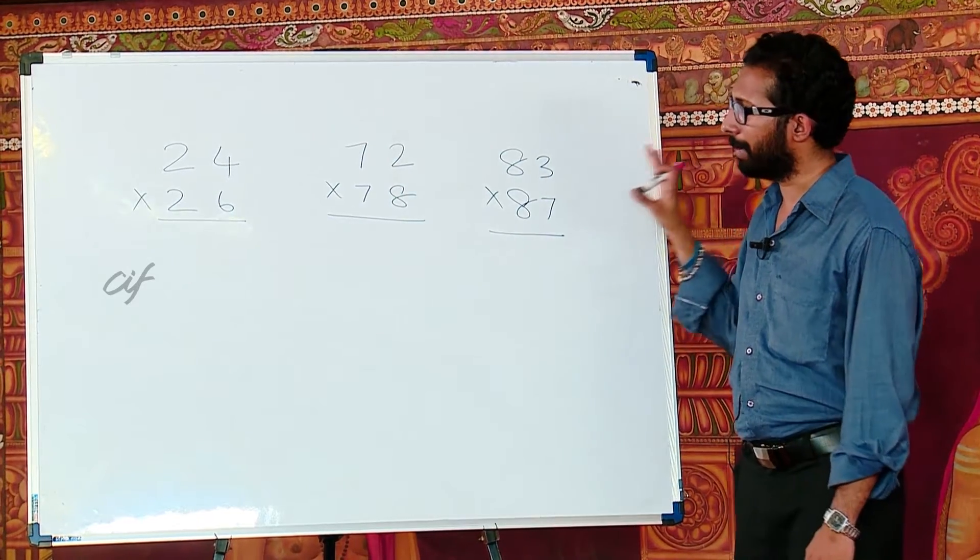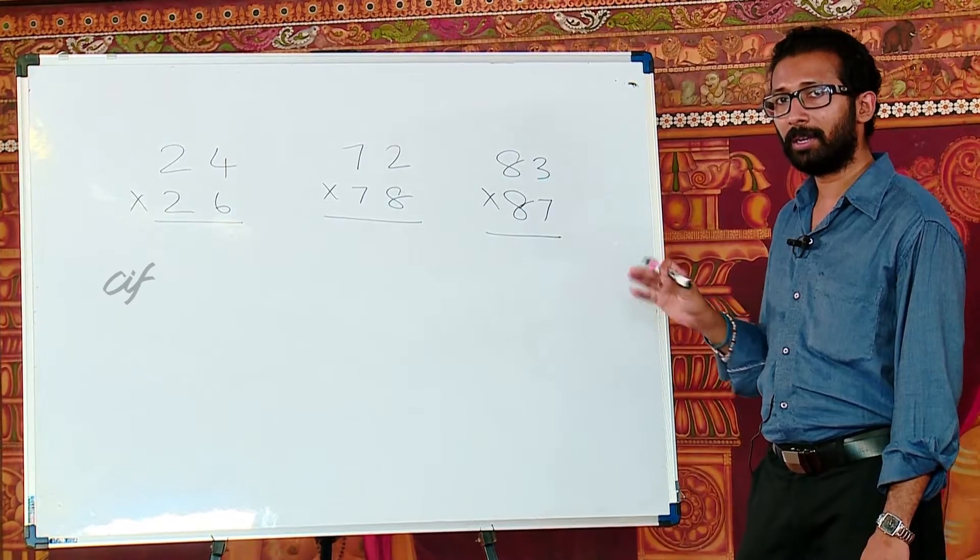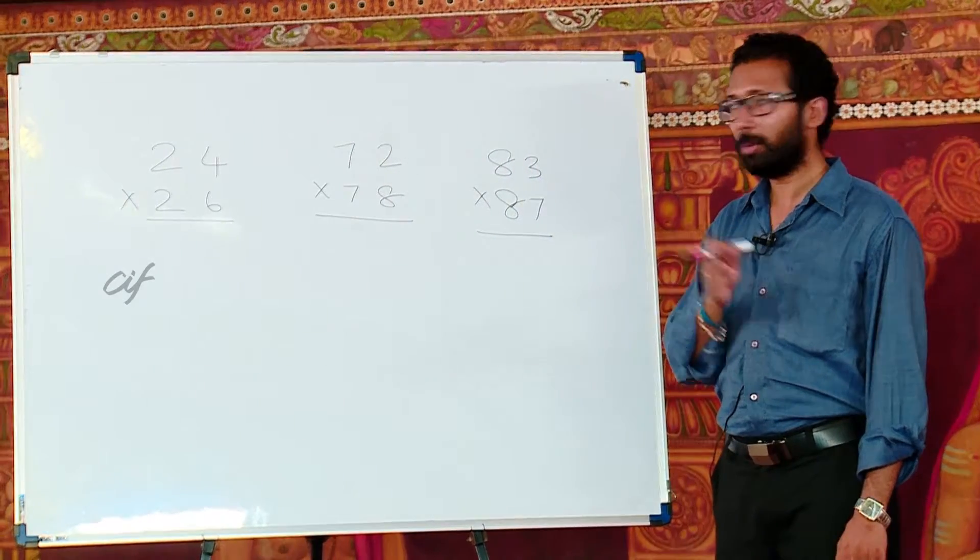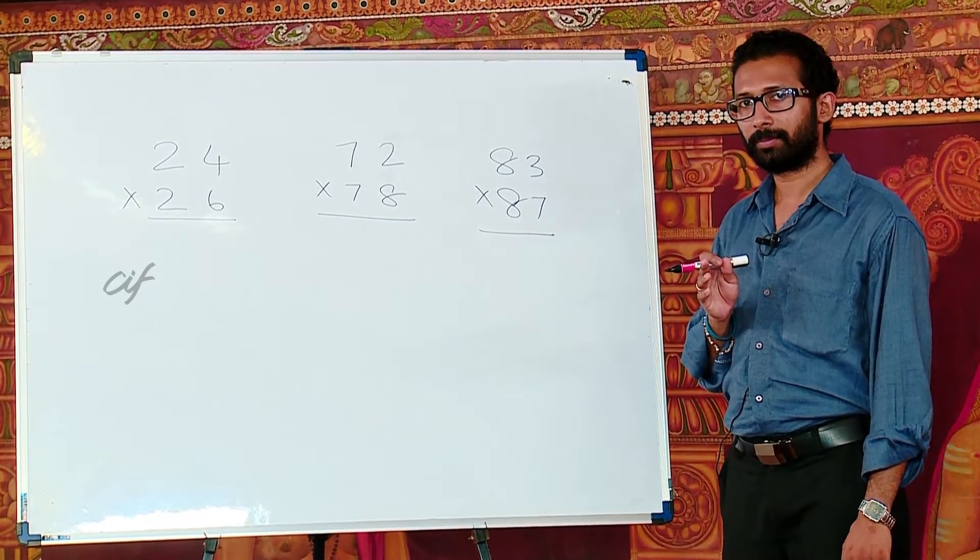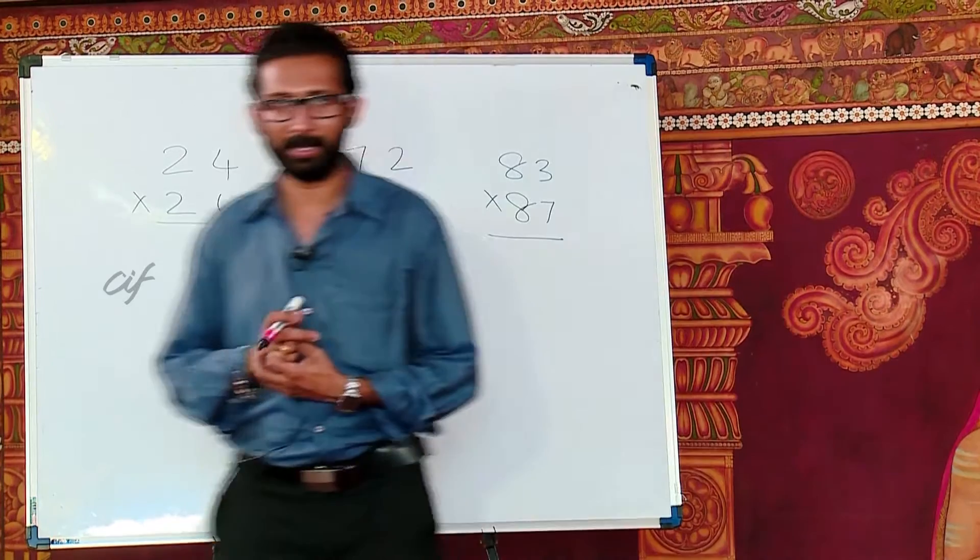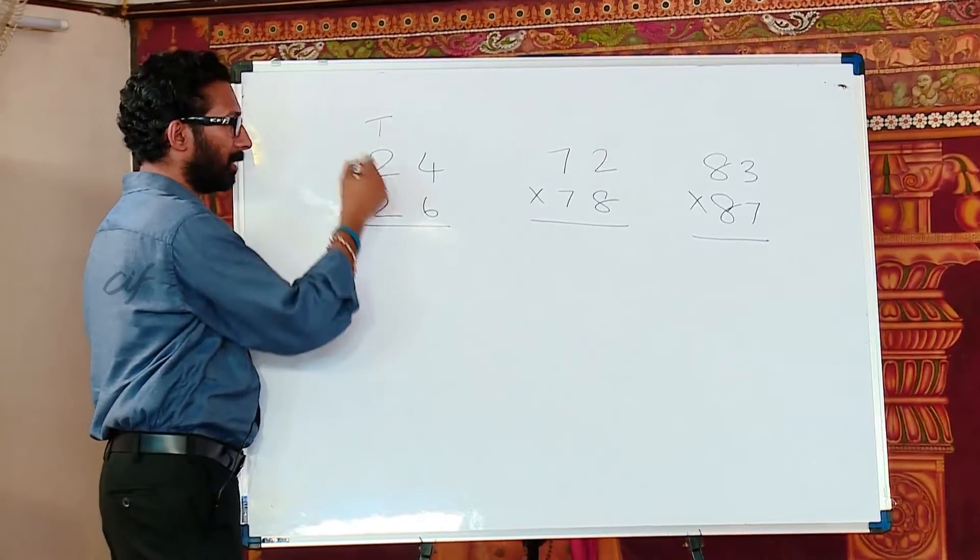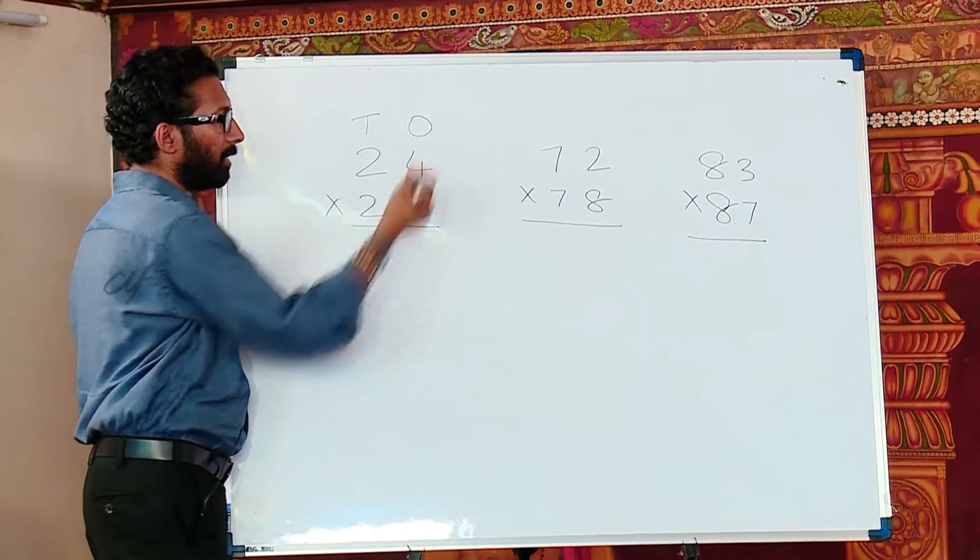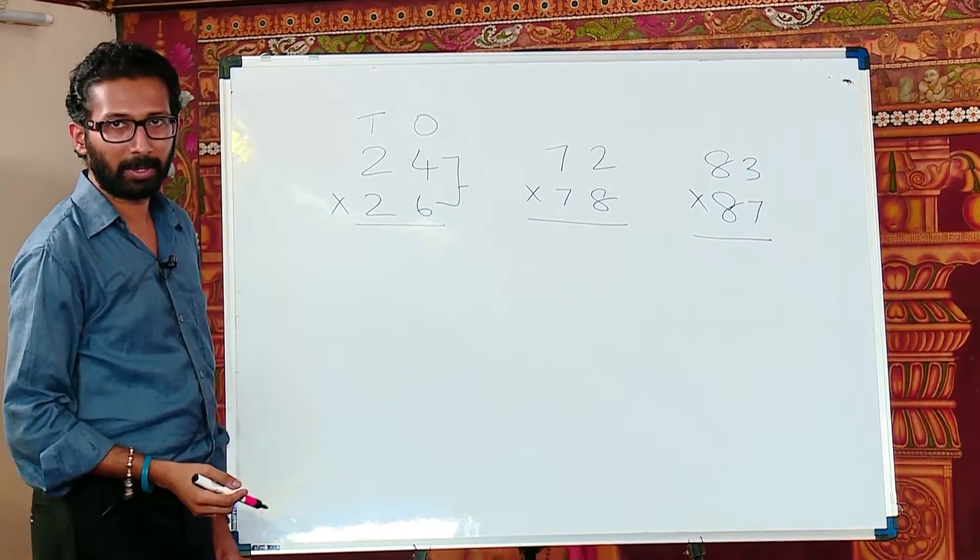If you might have observed, there is a pattern that repeats in all the three questions. If you haven't seen the pattern, what I would suggest is you pause the video and try to look at the pattern and then you can continue. So I hope you might have seen the pattern in this, right? The pattern is the tens place digits are the same and the ones place digits or the units place digits add up to 10 in every example.